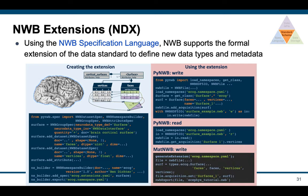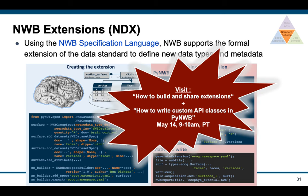MatNWB similarly supports this — it will actually generate physical code for you from the extension through the generate_extension call, and then you can use those MATLAB classes directly to read and write the data. If you're interested in extensions, please visit our tutorials on how to build and share extensions and how to write custom API classes in PyNWB on May 14th from 9 to 10.